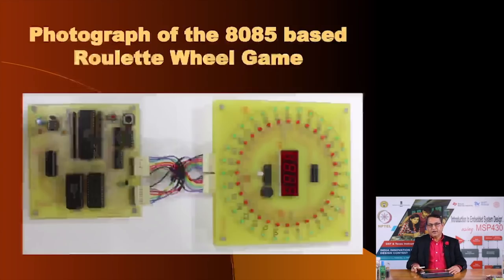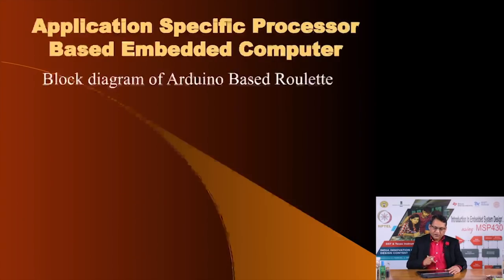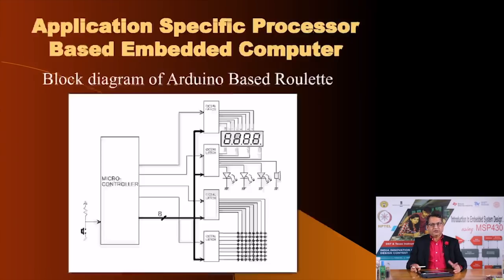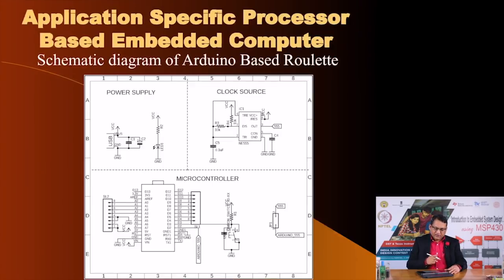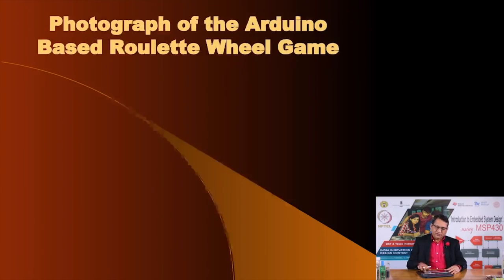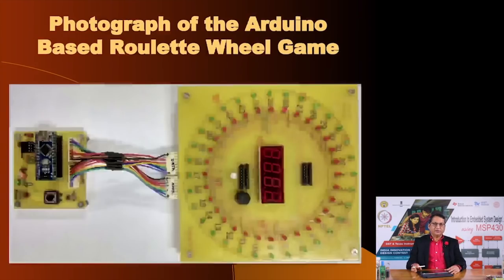The same roulette wheel application was then implemented using an Arduino microcontroller (which uses an AVR microcontroller). The block diagram shows far fewer blocks because the microcontroller integrates the microprocessor, memory, and ports into a single chip. The schematic has significantly fewer components, and the resulting PCB is very small — just the microcontroller, a switch, and the LED rings and seven-segment displays.